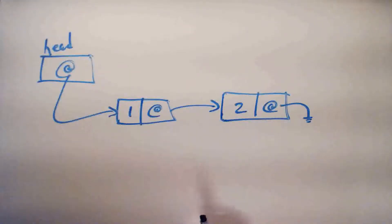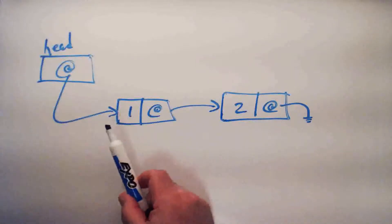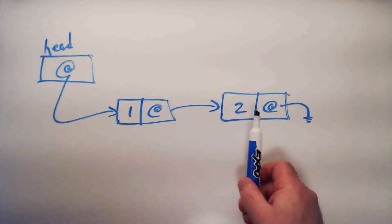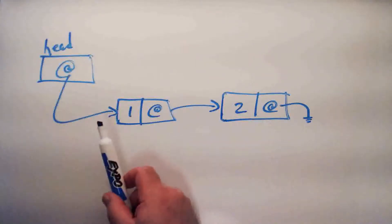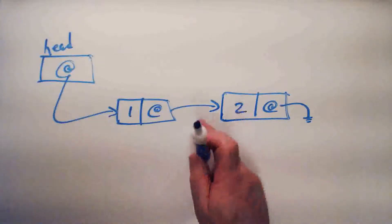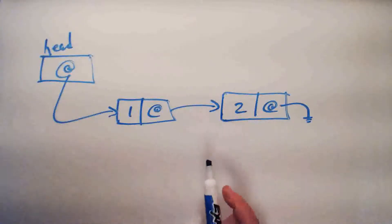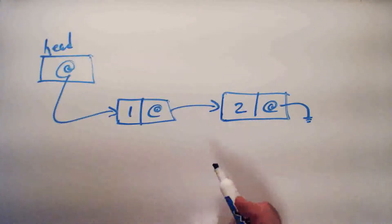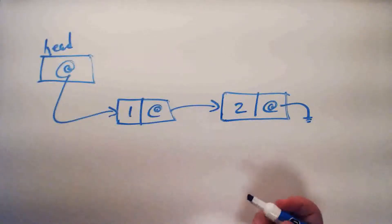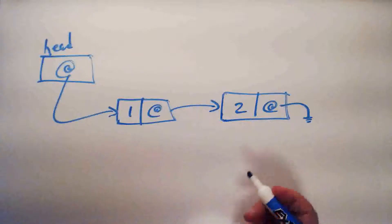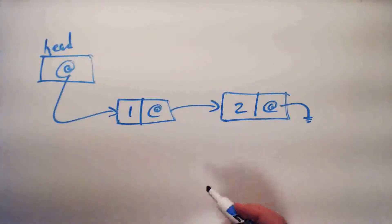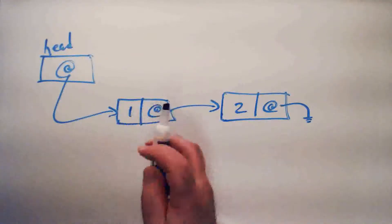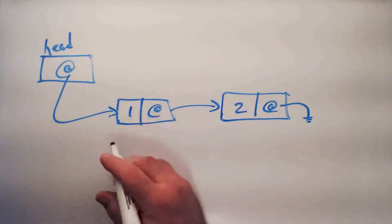We unified the case where we were inserting into an empty list versus inserting into a list that already has items in it. So we only had one set of code that we really had to write for push, and the same thing for pop. It only added new nodes to the beginning.